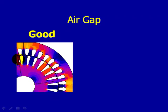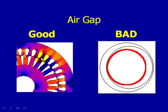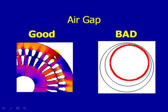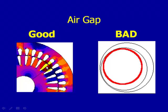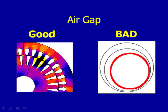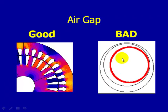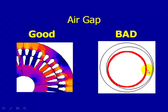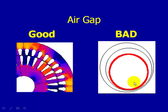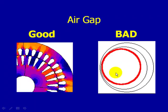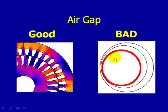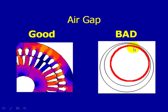So what do we mean when we say air gap? Essentially, a good air gap means that as the rotor rotates 360 degrees, there's no difference in spacing between the rotor and the stator — it's very uniform through its revolutions. A bad air gap, or bad eccentricity, is where the air gap fluctuates as it rotates 360 degrees between the rotor and the stator.